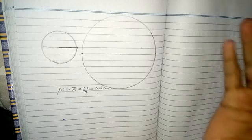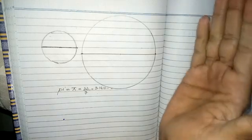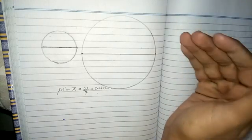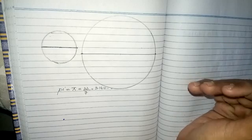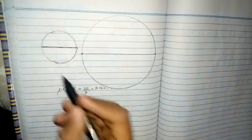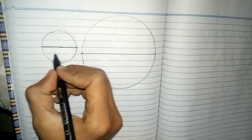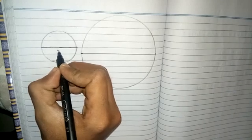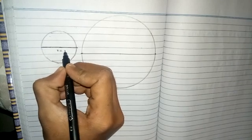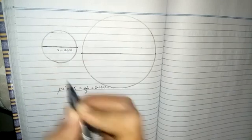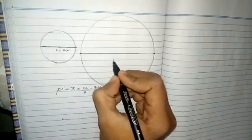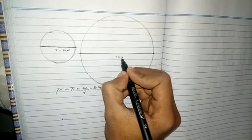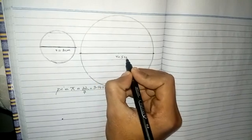First of all we have to discuss about the circle. Here I have drawn two circles. This circle has a radius of 3 cm, and this circle has a radius of 5 cm.